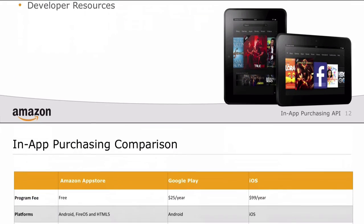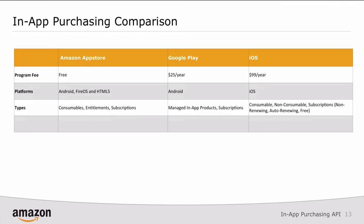If we compare it to Google Play and iOS, you can see very similar features. In fact, most of the types are the same. You've probably already set up SKUs in these stores today, so setting up SKUs inside the Amazon App Store is a process of just moving that existing information over.